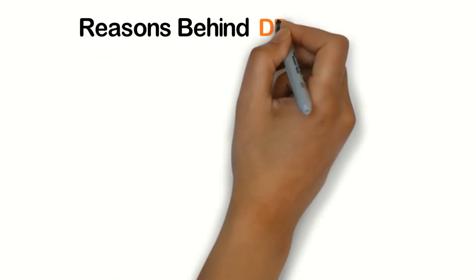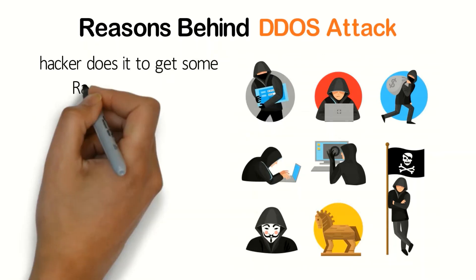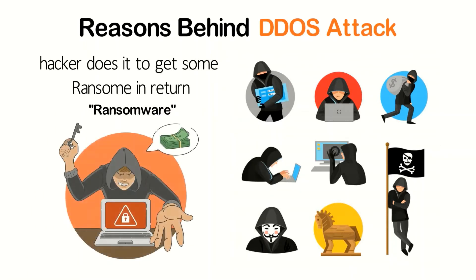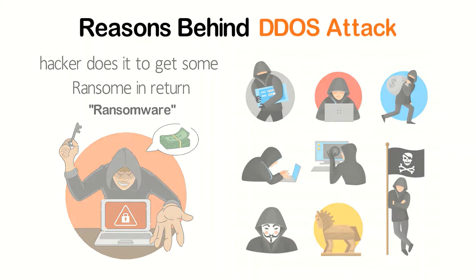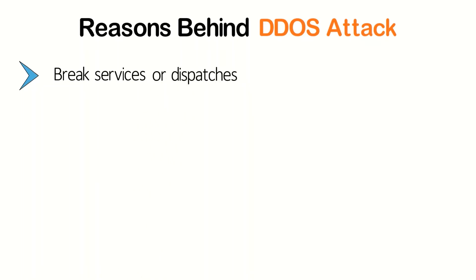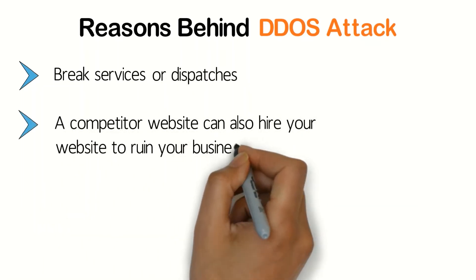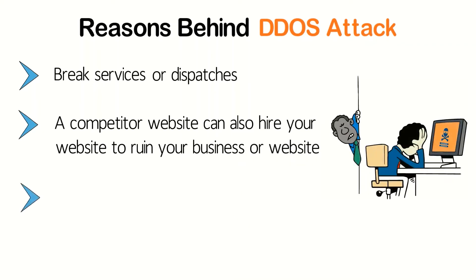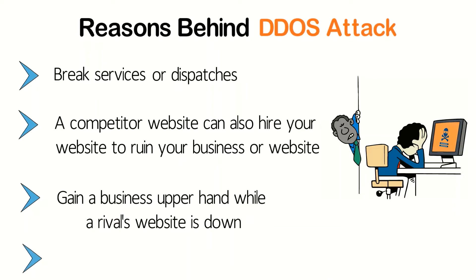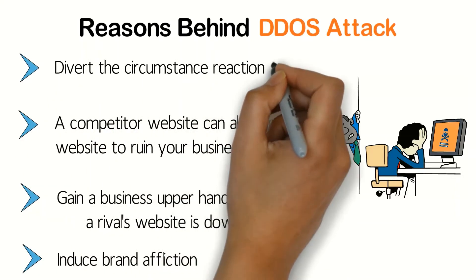Reasons behind DDoS attacks: Normally, we hear that a hacker does it to get some ransom in return, similar to ransomware. But it is not the primary mission of a hacker. The common reasons for DDoS attacks are: breaking services or dispatches, a competitor website hiring someone to ruin your business, gaining a competitive upper hand while a rival's website is down, inducing brand damage, and diverting the incident response team.